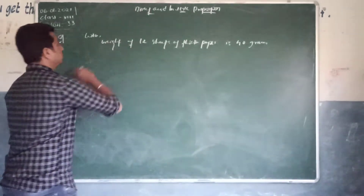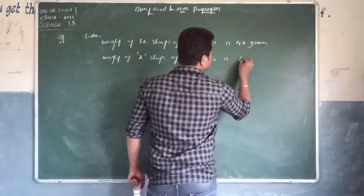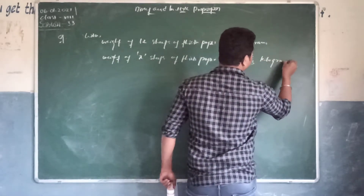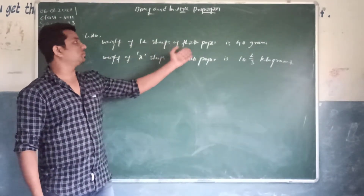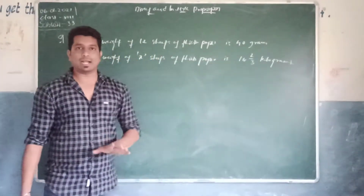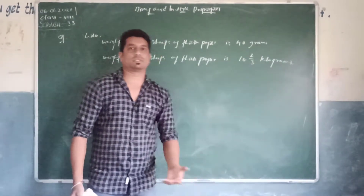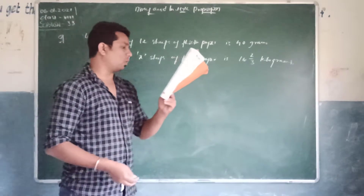We need to find how many sheets weigh 16 and 2/3 kilograms. So let us assume the number of sheets as X. Weight of X sheets of the same thick paper is 16 and 2/3 kilograms. So we don't know how many, so let us assume that as X.